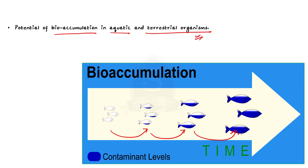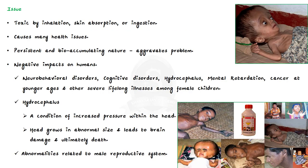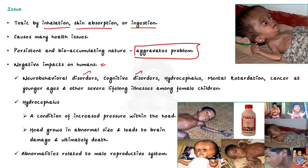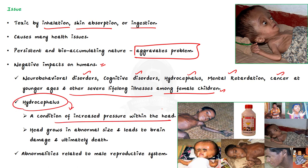The main issue with this pesticide is that it is toxic by inhalation, skin absorption, or ingestion, and it causes many health issues. Its persistent and bioaccumulating nature further aggravates the problem. In humans, it leads to neurobehavioral disorders, cognitive disorders, hydrocephalus, mental retardation, cancer at a younger age, and other lifelong illnesses, particularly among female children. Hydrocephalus is a condition that increases pressure within the head, causes the head to grow to an abnormal size, leading to brain damage and ultimately death.